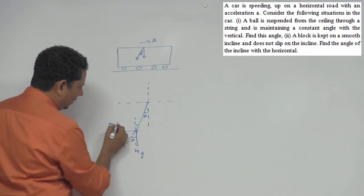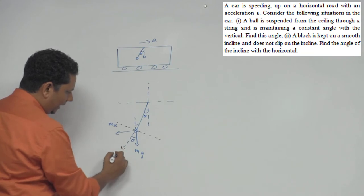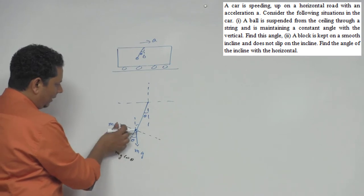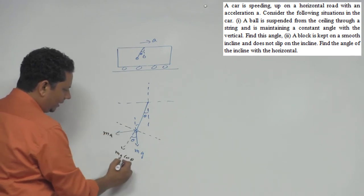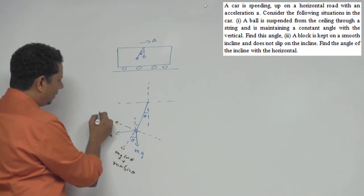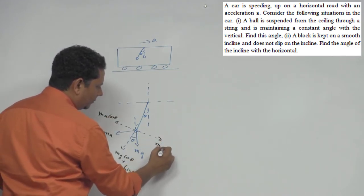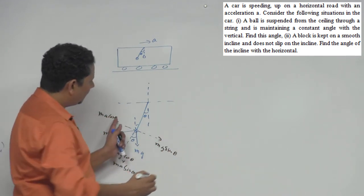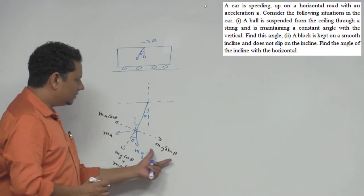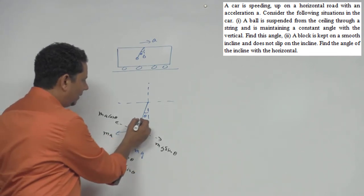If you see the components: this will be equal to mg cos theta, and ma component here is ma sin theta and ma component here is ma cos theta, and mg component here is mg sin theta. Because this angle is constantly maintained, it means ma cos theta and mg sin theta balance.